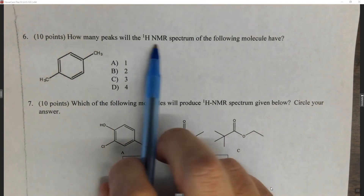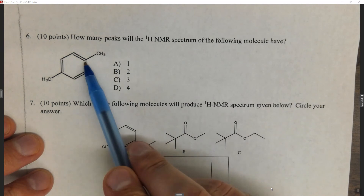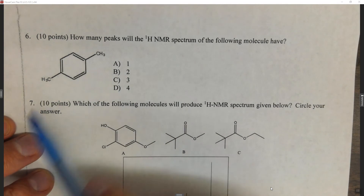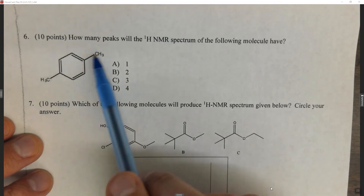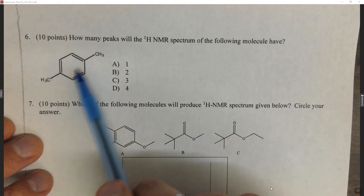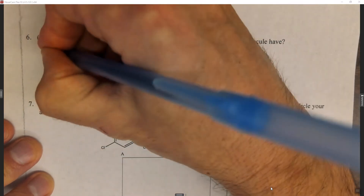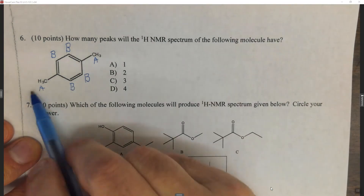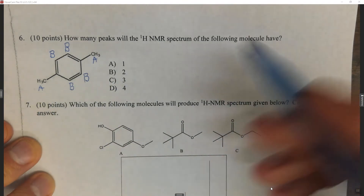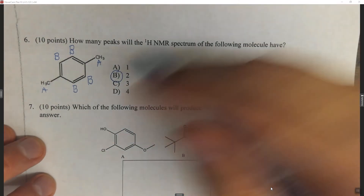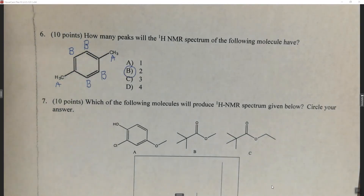Question six asks how many peaks the proton NMR spectrum of the molecule will have — essentially how many sets of equivalent protons exist. This molecule is para-xylene, which has a methyl group on each side. There's a plane of symmetry through the molecule, meaning all the methyl protons are equivalent to each other, and all the ring protons are equivalent to each other. So we only have two sets of equivalent protons — two peaks.